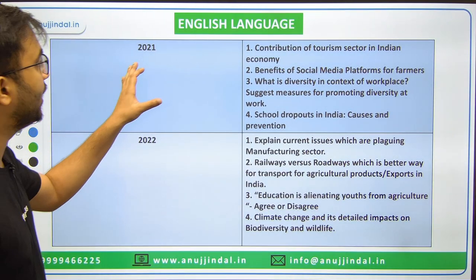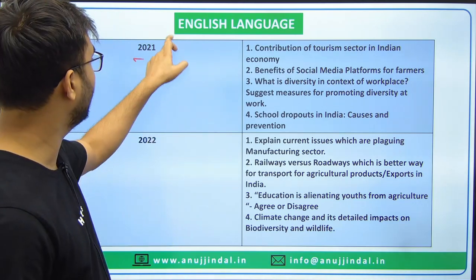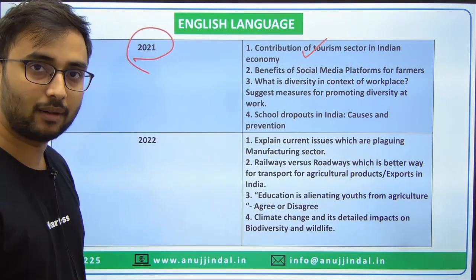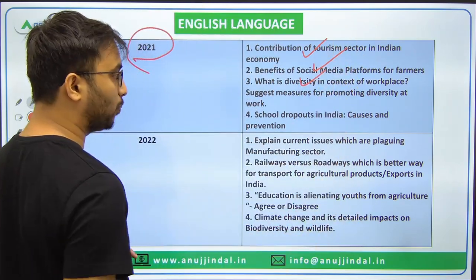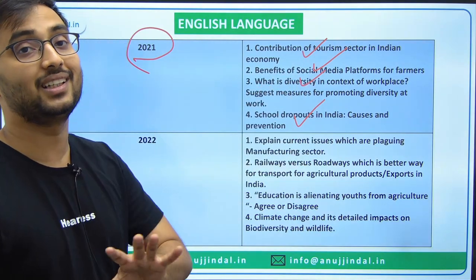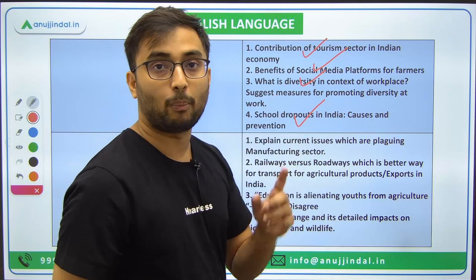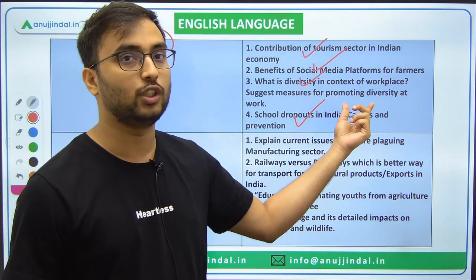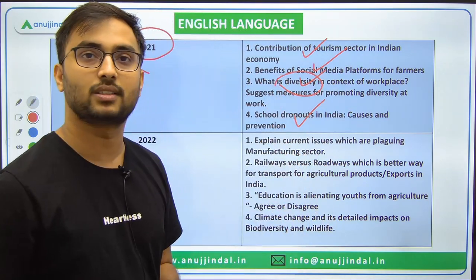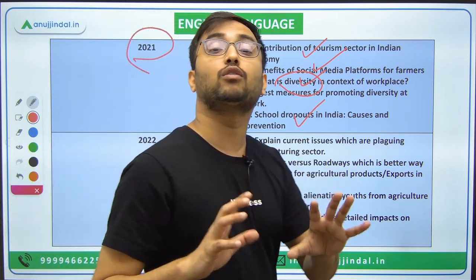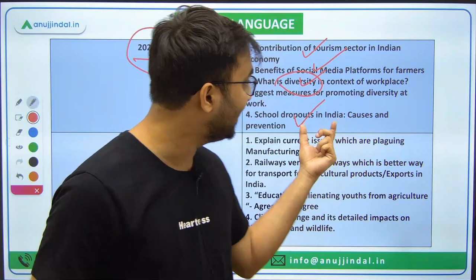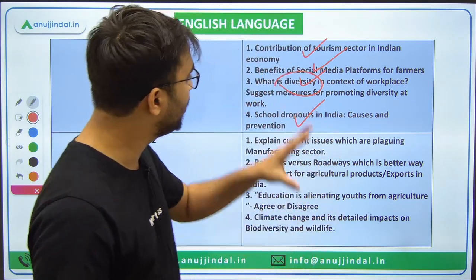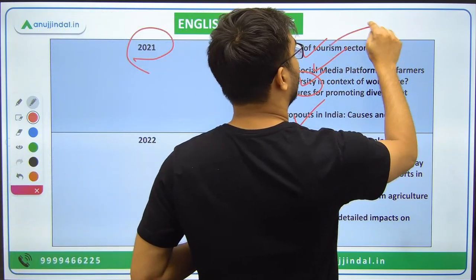Moving to recent years 2021 and 2022: In 2021, despite the pattern change, topics included Contribution of tourism sector in India, Social media, Diversity at workplace, and School dropouts. These may appear to be direct topics, but they are actually micro-topics from Economic and Social Issues and Agriculture. You need overall general understanding, a broad mindset, good comprehension skills, reading habits, and answer writing practice. The dynamic nature of essays has again improved over previous years.